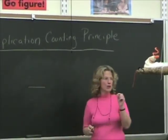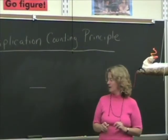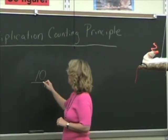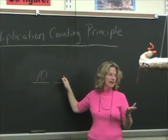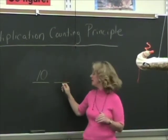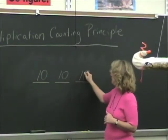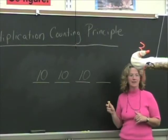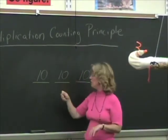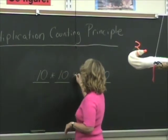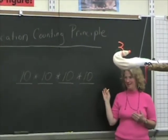All right, so how many choices are there for the first number in your password? Nine. No. Ten. There are ten choices. Now, does the second number depend upon the first? No, it can be anything it wants, right? So how many choices are there for the second? Ten. So according to the multiplication counting principle and what I just showed you, the total number of possible passwords that there could be is ten thousand, right?